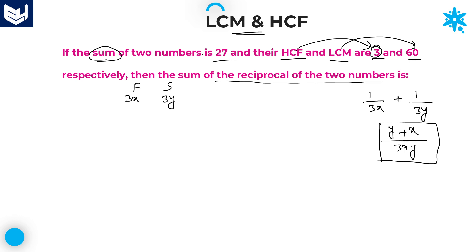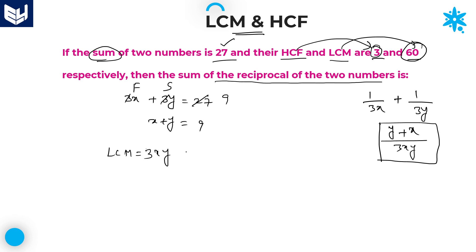The first information given is that the sum of two numbers is 27. The two numbers are 3x and 3y, so 3x + 3y = 27. Cancelling 3, we get x + y = 9. And one more piece of information: LCM of the two numbers is 60. LCM of 3x and 3y is equal to 3xy, which is given as 60. So now we have x + y = 9 and 3xy = 60.